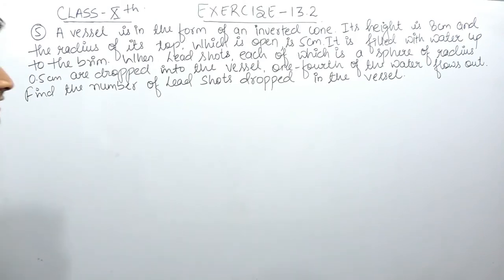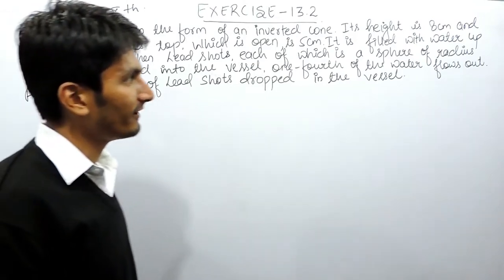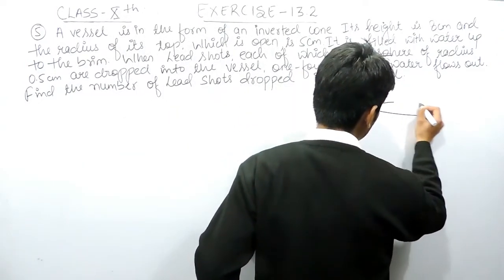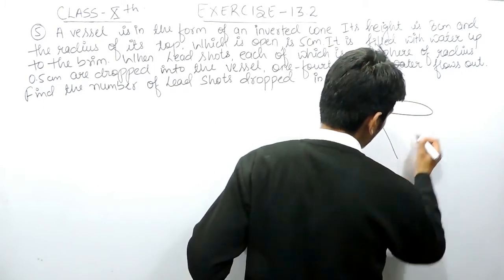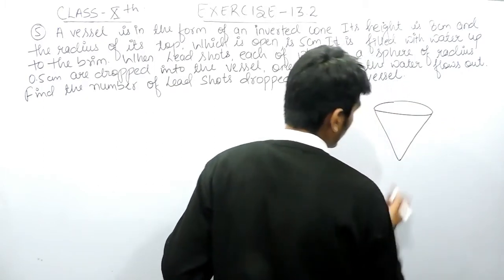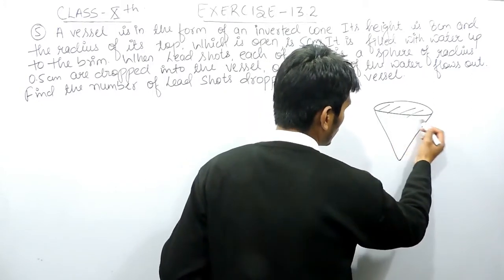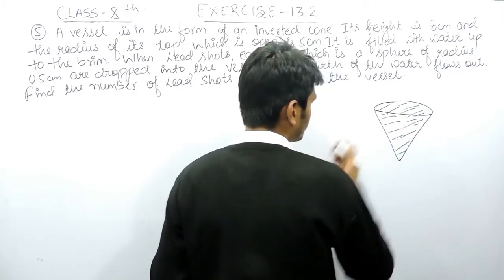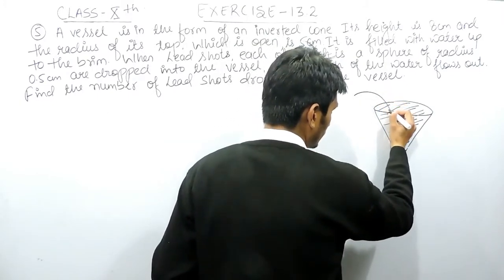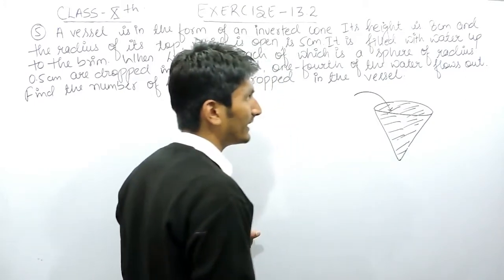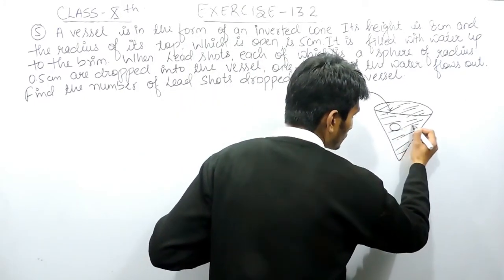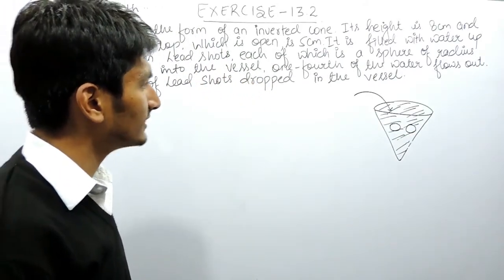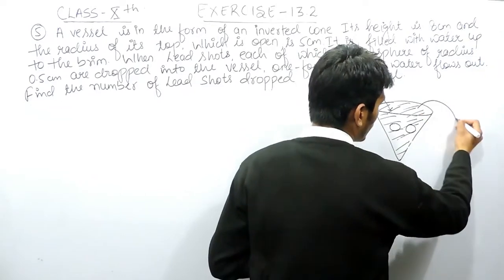You have to find the number of lead shots dropped into the vessel. A cone is given, completely filled with water, and when lead shots — which are basically spherical balls — are dropped into this vessel, some amount of water flows out.